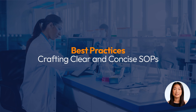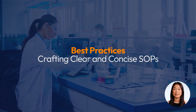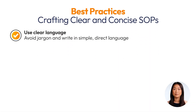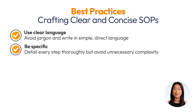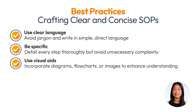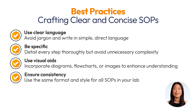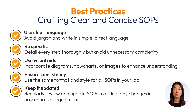When crafting your SOP, keep these best practices in mind. Write as clearly as possible — avoid jargon and write in simple, direct language. Be specific and detail every step thoroughly, but avoid unnecessary complexity. Utilize visual aids by incorporating diagrams, flowcharts, or images to enhance understanding. Ensure consistency by using the same format and style for all SOPs in your lab. Finally, regularly review and update SOPs to reflect any changes in procedures or equipment.